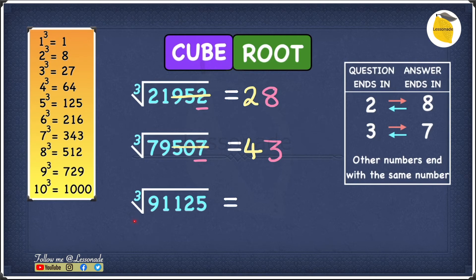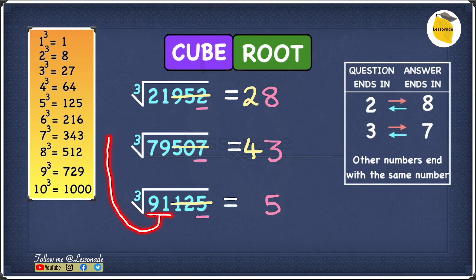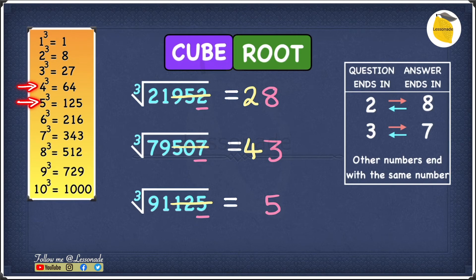Let's move to the next one: cube root of 91125. The last digit is 5, which ends with the same number, so our answer will also end in 5. Cross out the last three digits, and we're left with 91. The 91 fits between 4 cubed and 5 cubed, between 64 and 125. Since 4 cubed is smaller, our answer starts with 4. So our answer is 45.